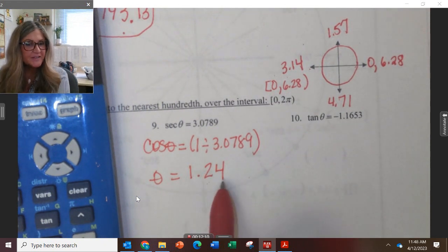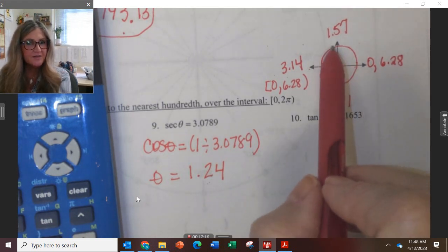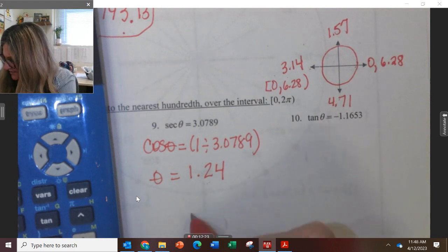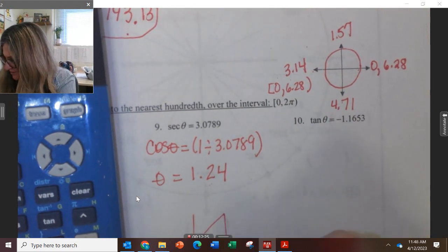Is this 1.24 degrees? No, it's 1.24 radians. Where is it then in the unit circle, which quadrant? Quadrant 1. It's right about there. So one of my answers then is 1.24.